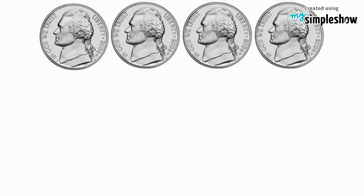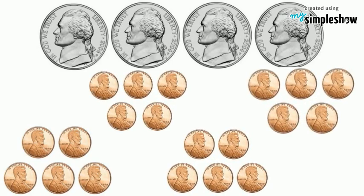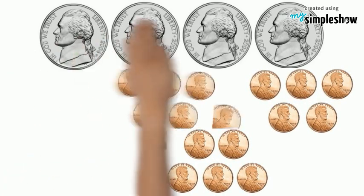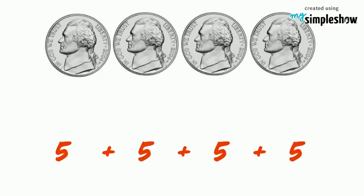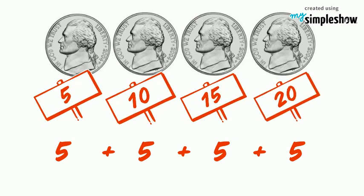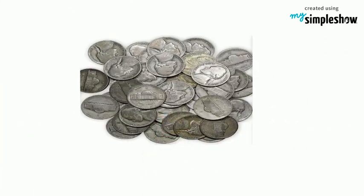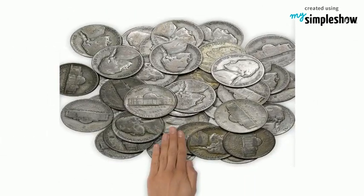Try another one. Look at these four nickels. Imagine counting five pennies for each nickel. So here are five, and five more, and five more, and five more. Let's count them by fives: five, ten, fifteen, twenty. Counting nickels is counting by fives.